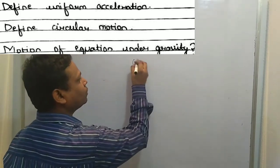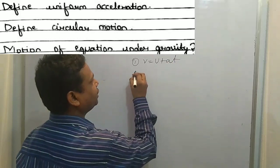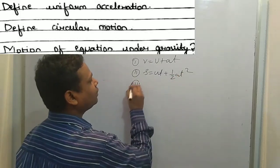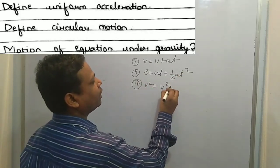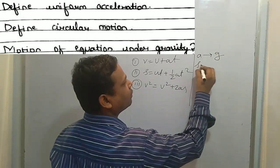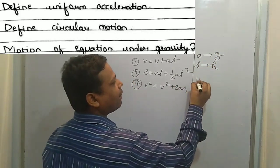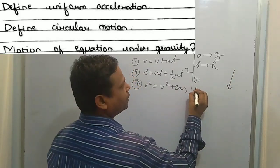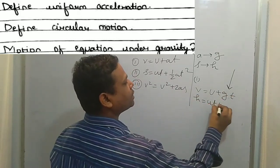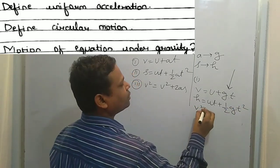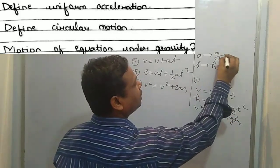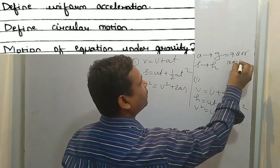Next question: motion equations under gravity. The three equations are: first, v = u + at; second, s = ut + ½at²; third, v² = u² + 2as. Under gravity, 'a' is replaced by 'g' and 's' by 'h'. If an object falls downward, the equations become: v = u + gt, h = ut + ½gt², and v² = u² + 2gh, where g = 9.8 or 10 m/s².